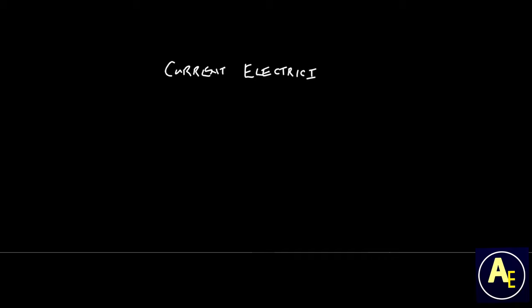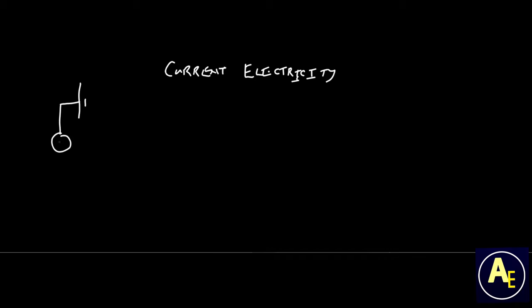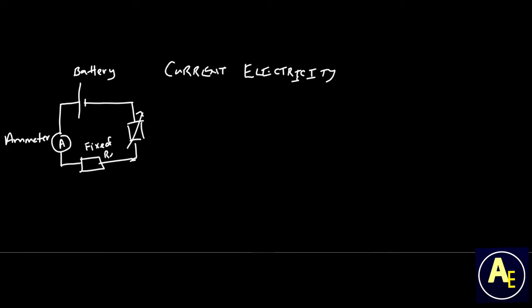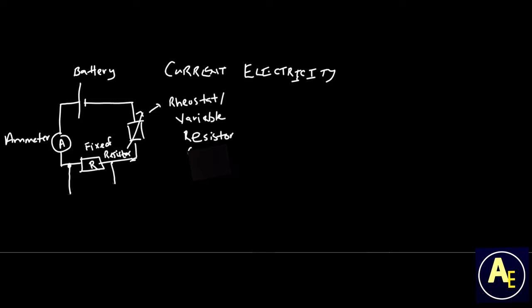Hello again everybody, and welcome. Today we look at series and parallel circuits. Before we do, we begin with a quick recap on current electricity. Using a simple setup of a circuit, we have a battery which is our power source — in this case a DC power source — an ammeter which measures current, a fixed resistor which is also called our load, and a rheostat. In the previous video there was an explanation of what the rheostat was used for in varying both current and voltage.